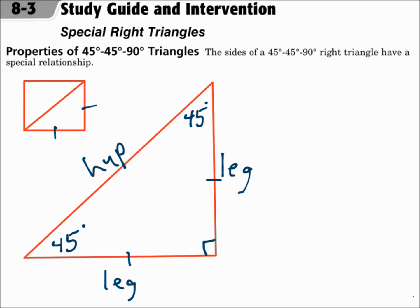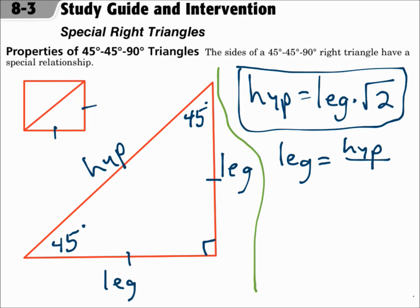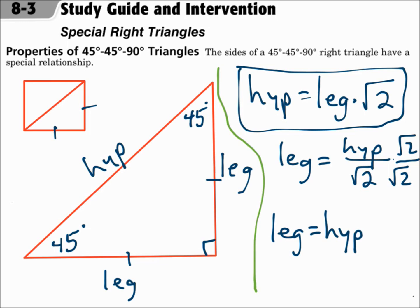There are formulas to use with a 45-45-90 triangle. The first formula is that the length of the hypotenuse is equal to the length of the leg times the square root of 2. You could shuffle that formula around and solve it for the leg by dividing each side by the square root of 2, so the leg equals the hypotenuse divided by the square root of 2. To rationalize that, you multiply the top and bottom of the fraction by the square root of 2, and that gives you a new formula: the leg equals the hypotenuse times the square root of 2 over 2.